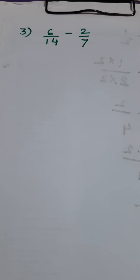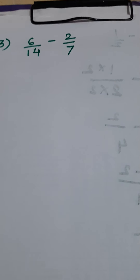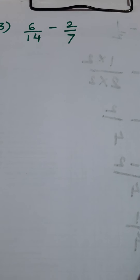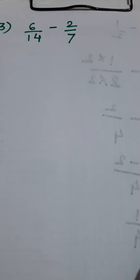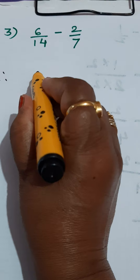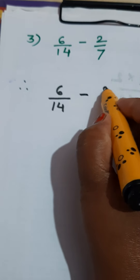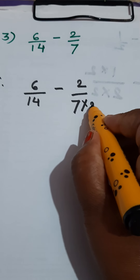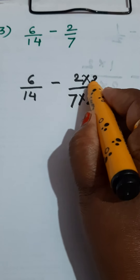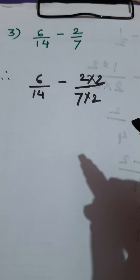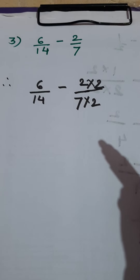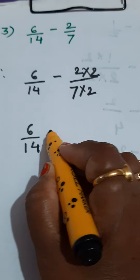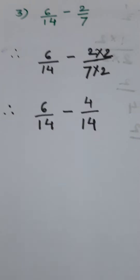Look at the third example: 6 upon 14 minus 2 upon 7. Observe the denominators carefully. 7 and 14 are from the same table. We can convert 7 into 14 — 7 twos are 14. So write down the first fraction as it is: 6 by 14 minus 2 upon 7. We want to convert this 7 into 14, so multiply the fraction by 2 to get denominator 14. Whatever operation we apply, we do it to both numerator as well as denominator. Therefore, 6 upon 14 minus — 2 twos are 4 and 7 twos are 14. Now they are like fractions.